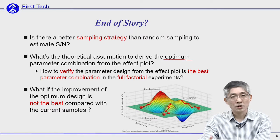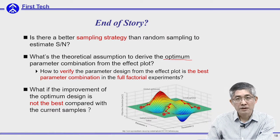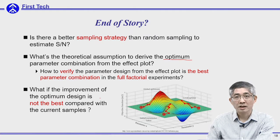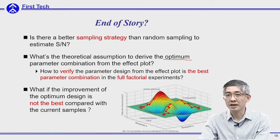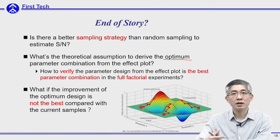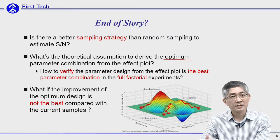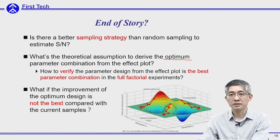Certainly you cannot do the full factorial experiment because you want to reduce cost, but is there any method that we can examine our result and make us more confident that our parameter design from the analysis of means will be the best in the full factorial? And also when you verify your design, what if the improvement of the optimum design is not better than the current design? If it is not better than the current design, certainly your derived design will not be the best in the full factorial.